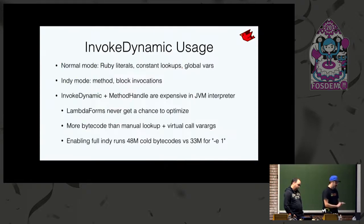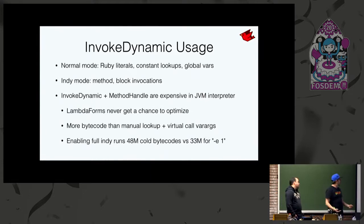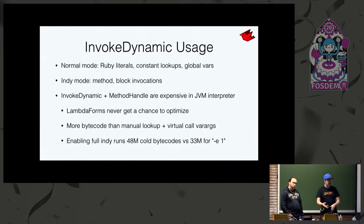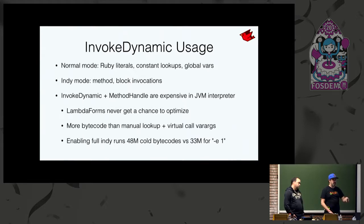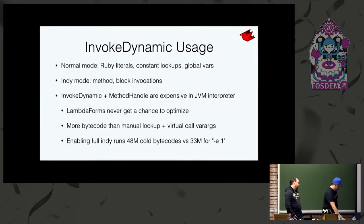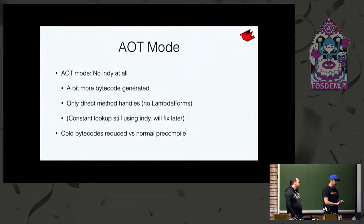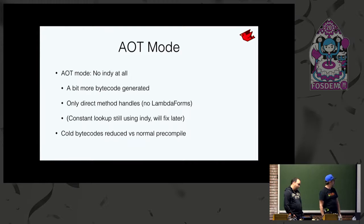I realized we were still using a lot of invokedynamic in bytecode that only runs once — a waste, because all the bytecode to bootstrap those call sites, all the lambda forms inside method handles, would execute through one time and never run again. They'd never JIT. With -Xint you see a tremendous amount more bytecode because of all those lambda forms churning and never turning into native code. So I did a modification for AOT mode that uses no invokedynamic at all. It's great for peak performance but for cold execution it's really not that great.